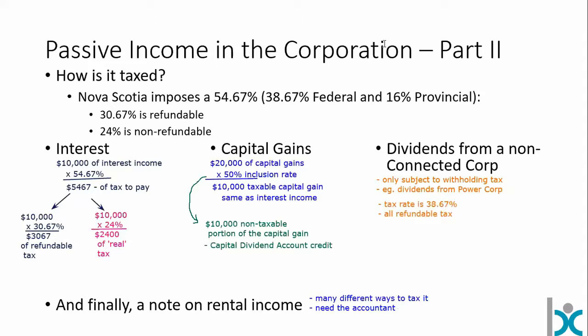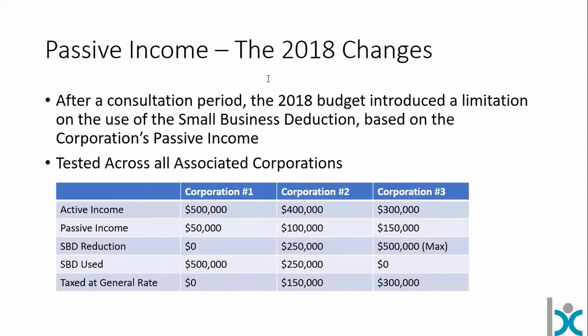We're going to have a quick look at the 2018 tax changes. One of the big changes we saw for 2018, straight out of the 2018 budget, following that year of consultation, was that now all your associated corporations — basically all the corporations that you own — would have their passive income potentially reduce their ability to access the small business deduction.